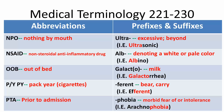Now for the prefixes and suffixes. Ultra means excessive or beyond — we all know ultrasonic. Then we have ALB, denoting a white or pale color, for example albino.